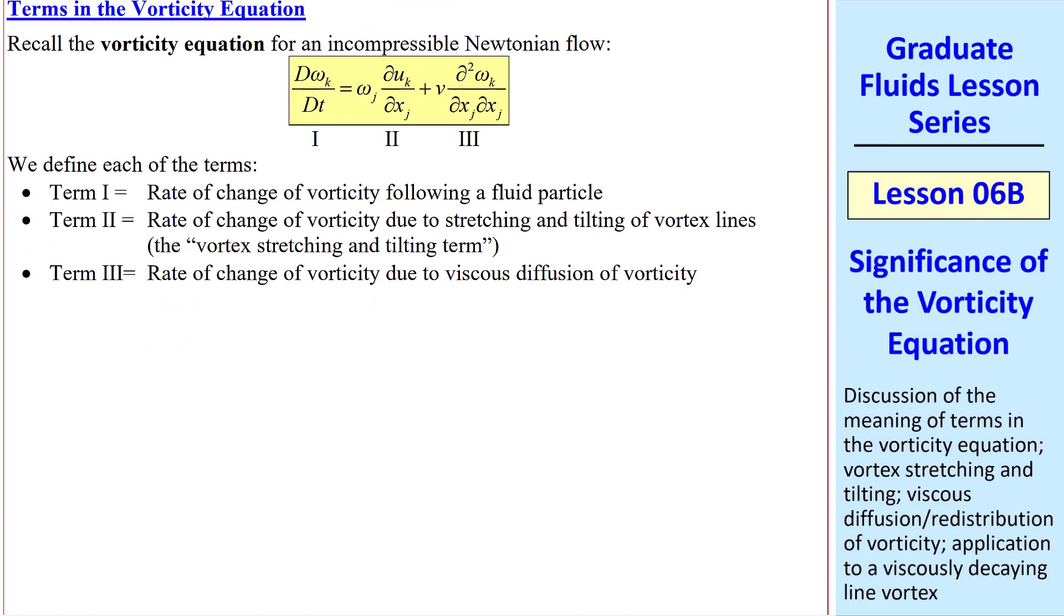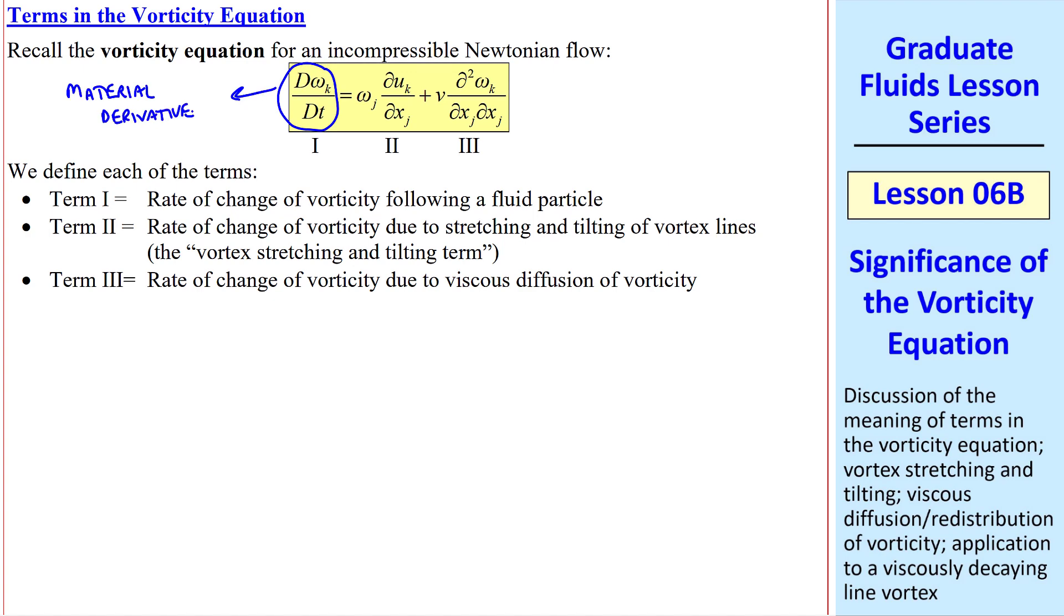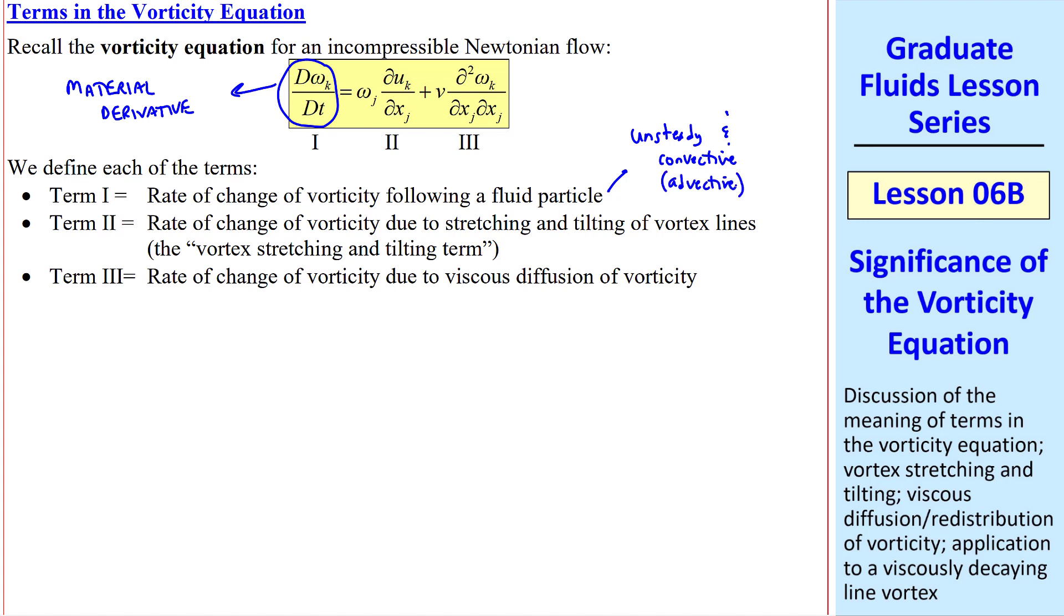Here's the vorticity equation that we had derived in a previous lesson for incompressible Newtonian flow with constant fluid properties. I label the terms 1, 2, and 3. Term 1 is the material derivative of vorticity, which means that it's the rate of change of vorticity following a fluid particle. It contains both unsteady and convective, I prefer the term advective, terms. The second term is the rate of change of vorticity due to vortex stretching and vortex tilting. Finally, term 3 is the rate of change of vorticity due to viscous diffusion of vorticity. Let's discuss the physical meaning of each term.